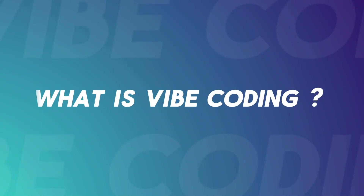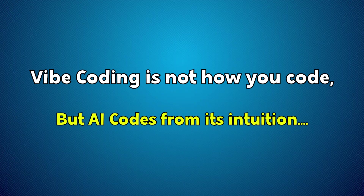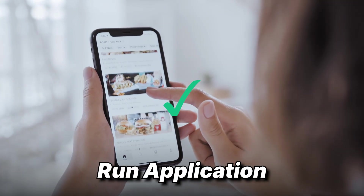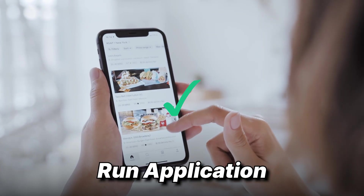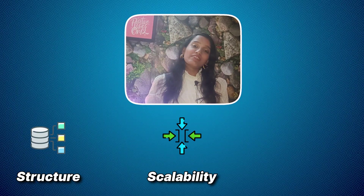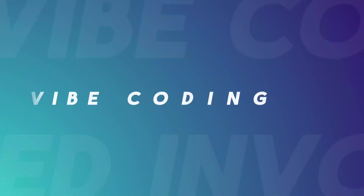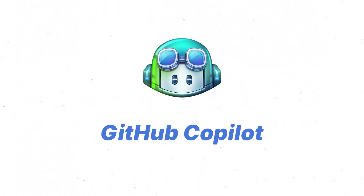So what is vibe coding? It's not about how you code — AI codes from its intuition. It doesn't need understanding of the full architecture; all it needs is to run the application. If there is any structure, scalability, or constraints beyond the obvious, with some minimal two-line description it will be able to build the app for you.